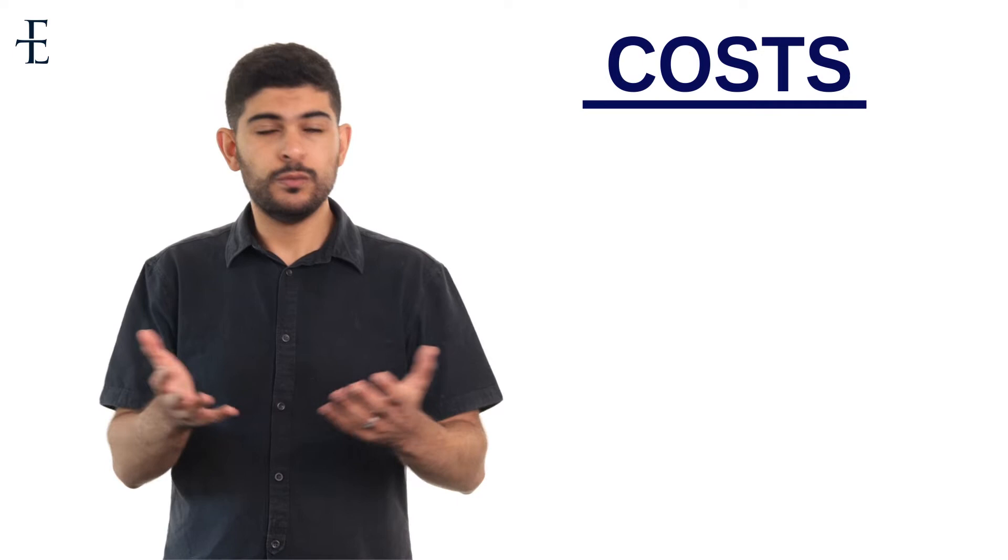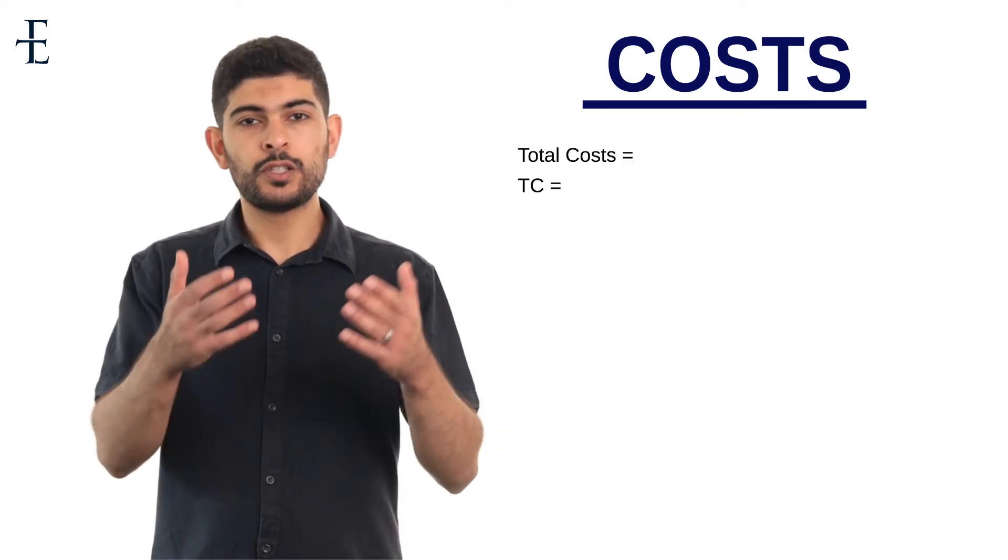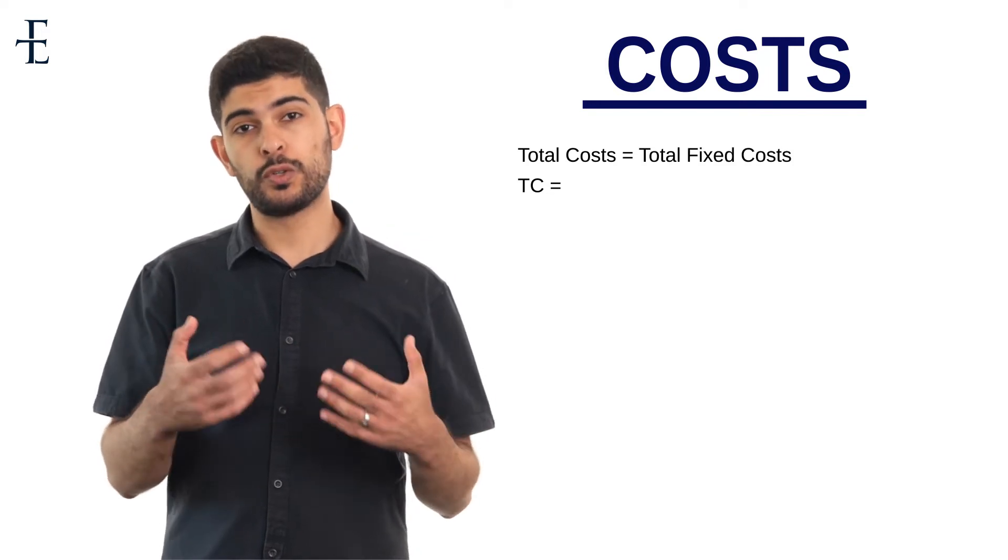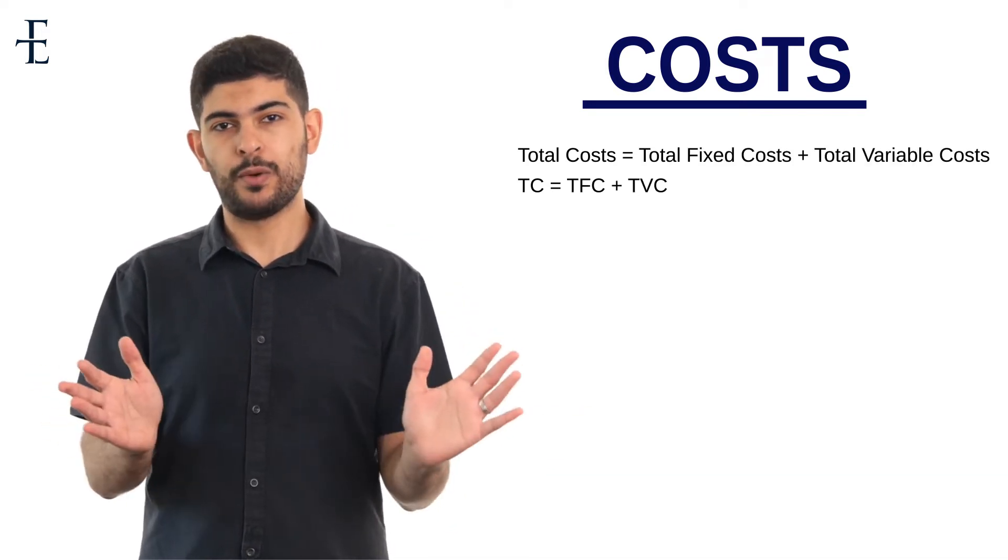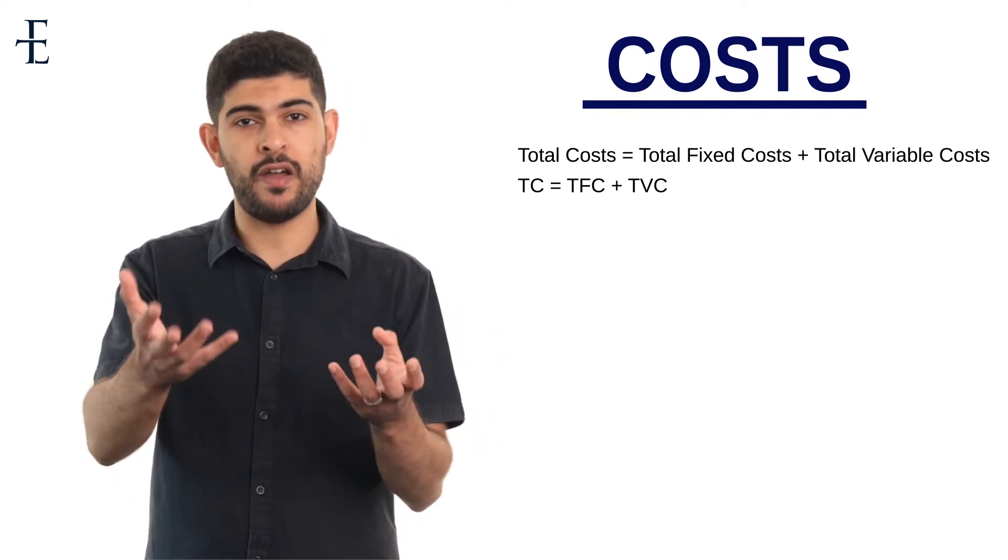Now that we've discussed the two types of costs, we need to go through some very basic mathematical formulas, starting with total cost. What would total cost be? Think about what we've just said so far. Total cost is equal to total fixed cost, TFC, plus total variable cost. Simple as that. If I want to take my total cost, I have to factor in my fixed and my variable costs.